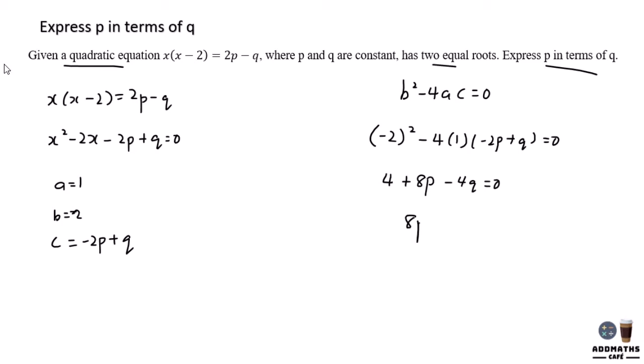Let's make all the p in one side and move the rest to the other side. So to eliminate the 8, I divide the whole equation by 8. 4 divided by 8, you will have